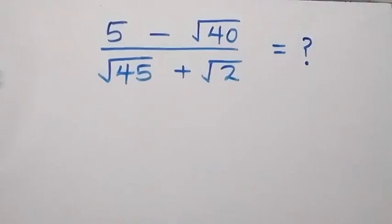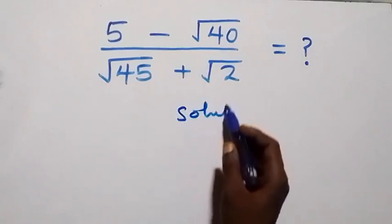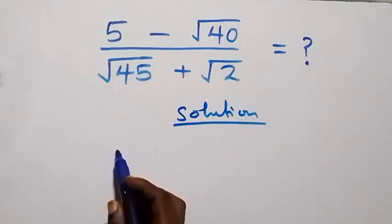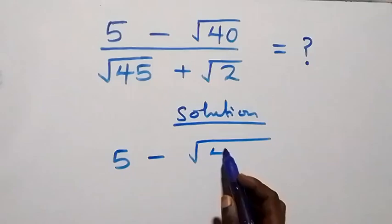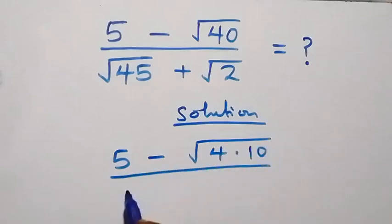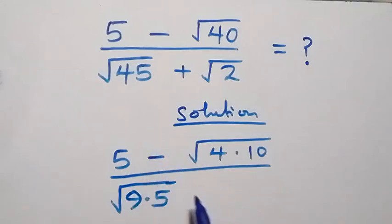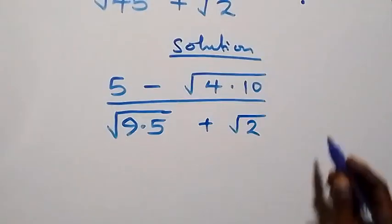Hello, you are welcome. How to solve this nice math problem involving square roots. We can rewrite this as five minus root four times ten, then divided by root nine times five — the same thing as root 45 — then plus root two.